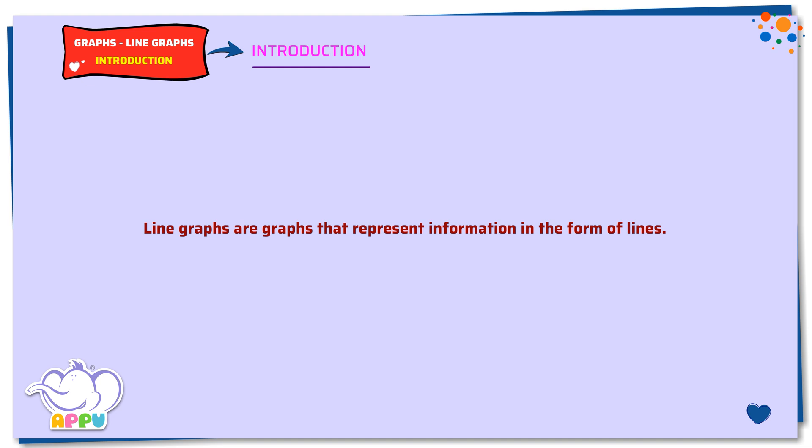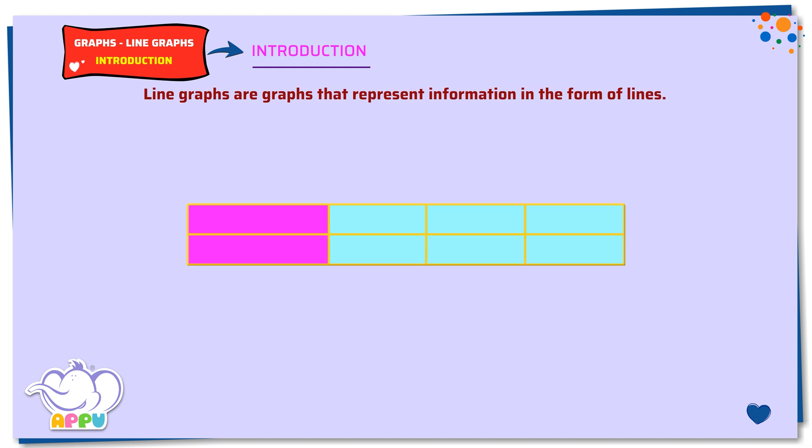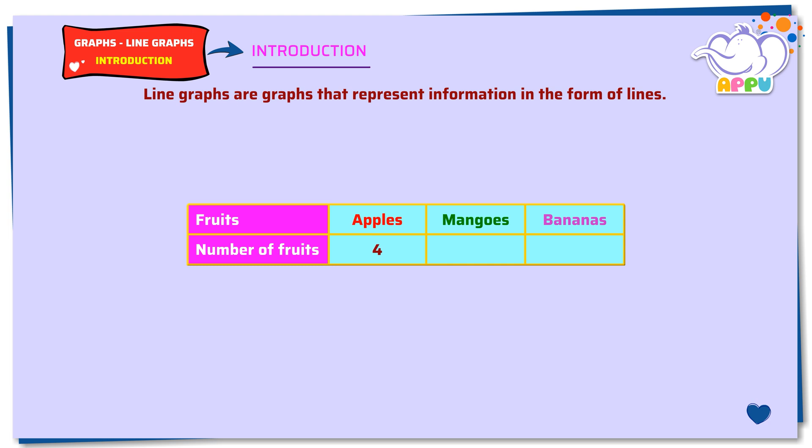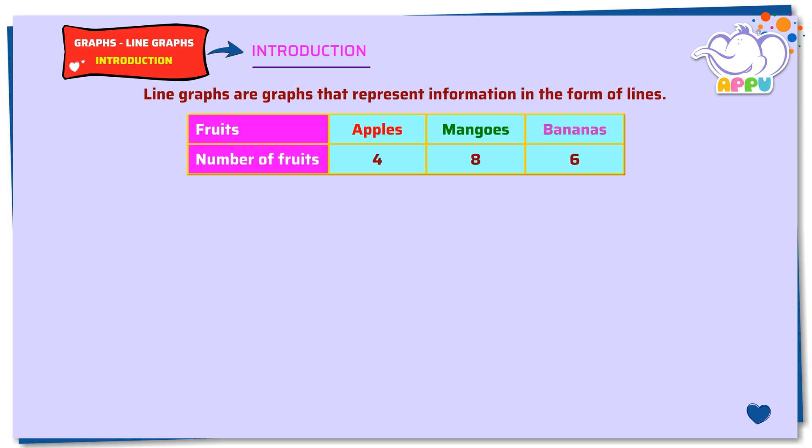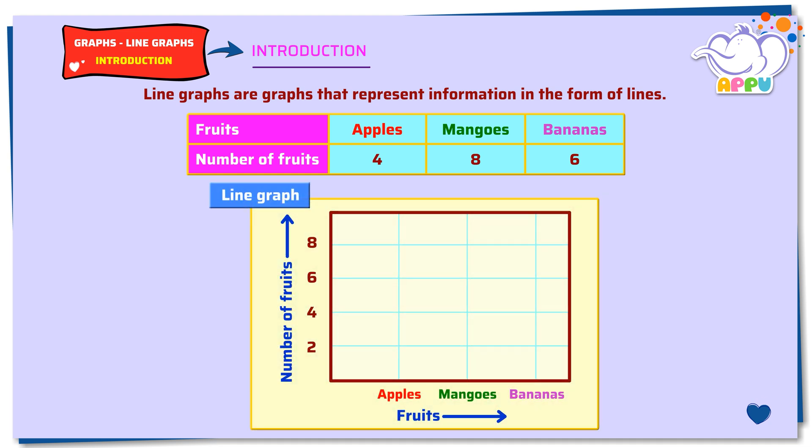Let's look at how to draw line graphs. In this table, we have three types of fruits: apples, mangoes, and bananas and their quantities. Now let's look at the table and draw a line graph.